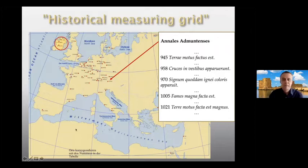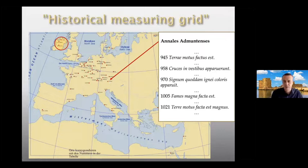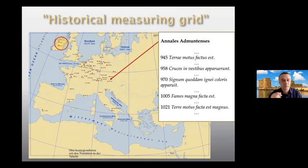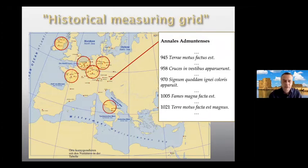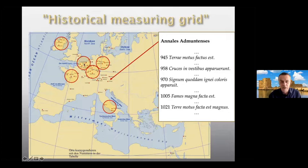The problem with all these annals and chronicles is that if a monk came from, let's say, Mainz to Salzburg, he brought his chronicle from one place to another, and there they wrote it in the new chronicle. So we have a lot of information which we have in different places, but which actually have only one source — and this is a big problem. We are aware of this since 150 years. So we built tradition groups. You can see here all these circles have monasteries which go back to the same roots, to the same chronicles in general. So inside of these circles, we can expect the same events in the chronicles, and outside we mostly don't have them. Or if we have them, then it's good because then it's more reliable.